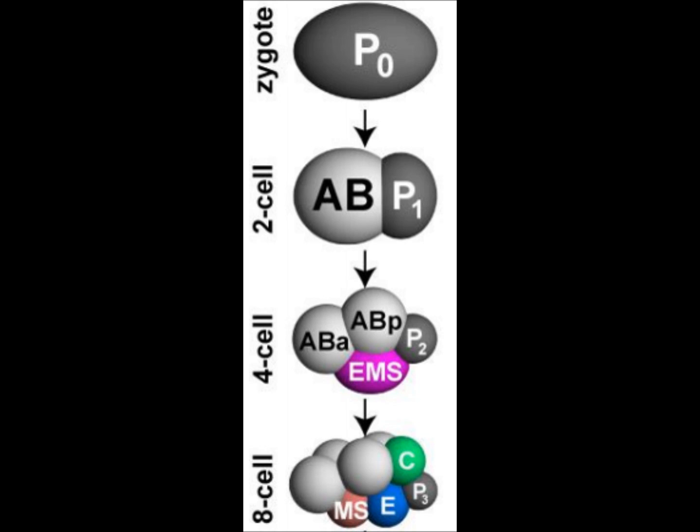This is a map of the C. elegans embryo in its early developmental stages coming from the zygote all the way to the 8-cell stage. The important thing to note is at the 4-cell stage there are 4 cells called ABA, ABP, P2, and EMS.